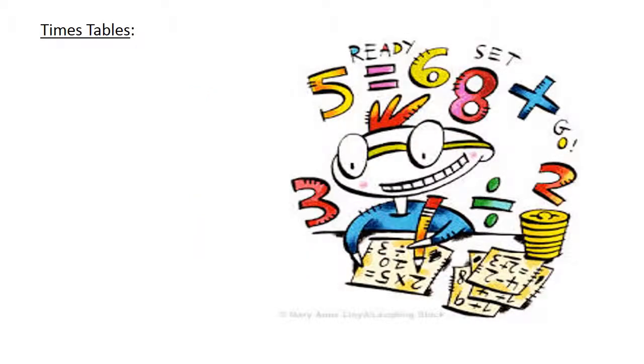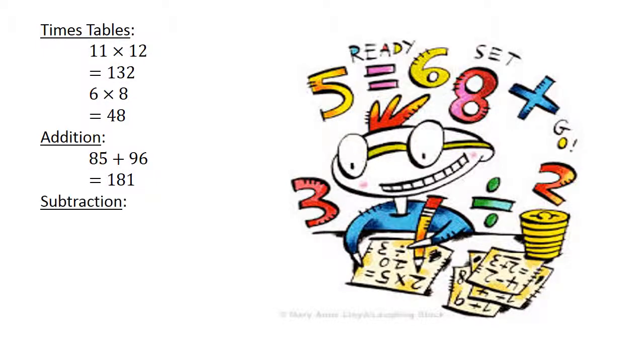Times Tables: 11 × 12 equals 132. 6 × 8 equals 48. Addition: 85 plus 96 equals 181. Subtraction: 14 minus 25 equals negative 11.